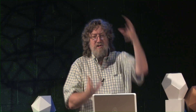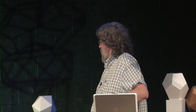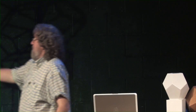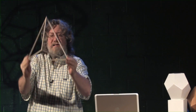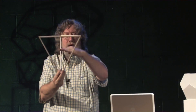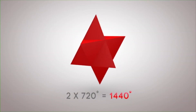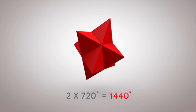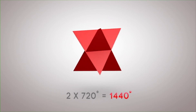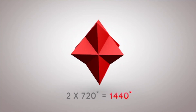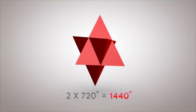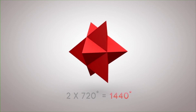And then we have the star tetrahedron — two tetrahedrons interlaced. If you picture one tetrahedron pointing up and one pointing down interlaced, it gives you what's known as the star tetrahedron or the stellated octahedron. It is composed of two tetrahedrons, each of 720 degrees. So here again you're seeing the repetition of 1,440 as the total angular measure of the star tetrahedron.